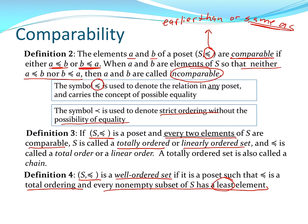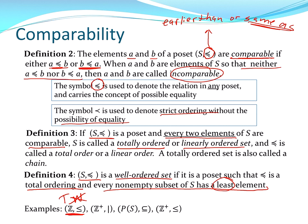Let's look at some examples. The integers with the less than or equal to relation: every two elements are comparable under less than or equal to, so it is a totally ordered set. However, it does not have the property that every non-empty subset has a least element — take the subset of negative integers, which has no least element. So it is not a well-ordered set.